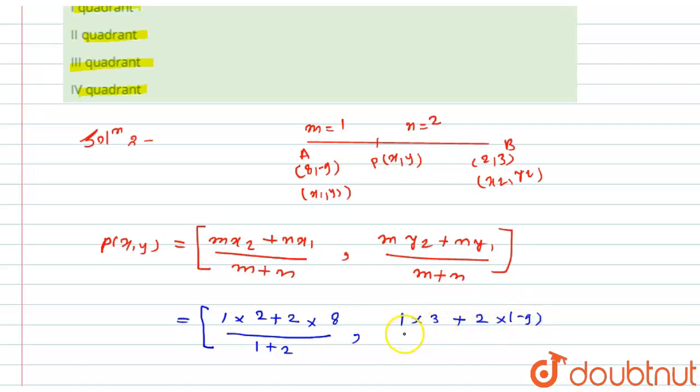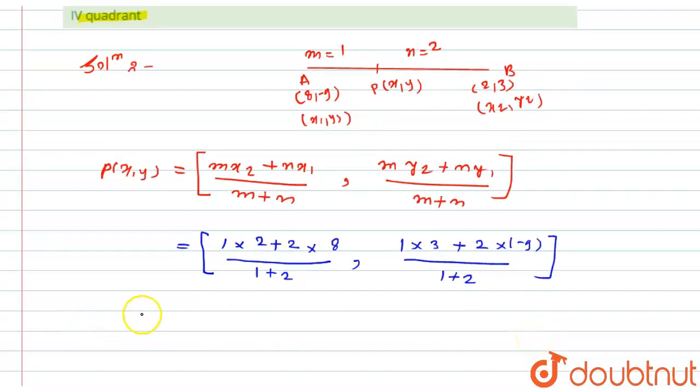Now I will solve this. Here I will get the coordinates of P: 2 + 16 is 18, divided by 2 + 1 is 3.